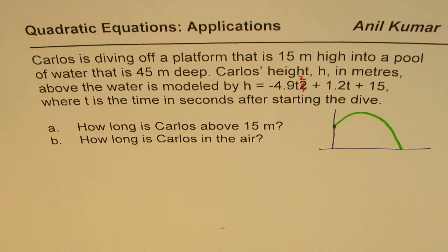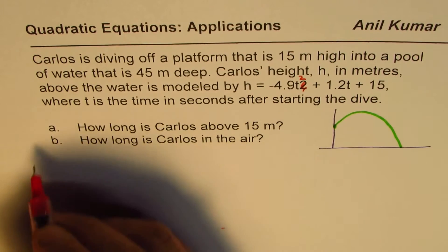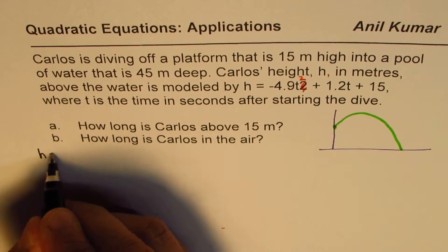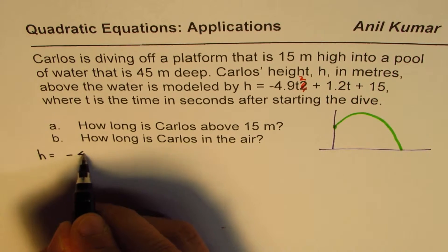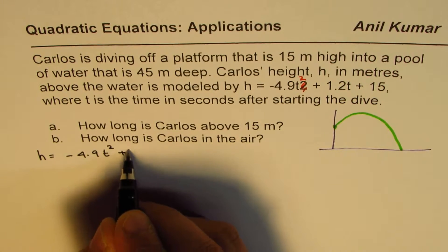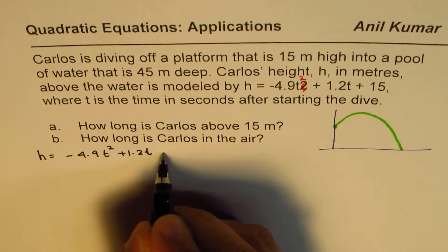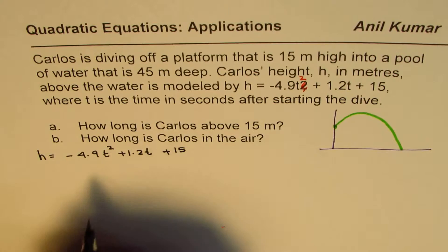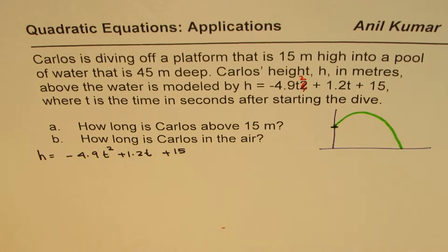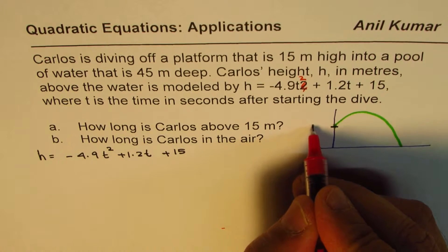As you can see from the given equation, let me write down the equation first, and then we'll discuss. The equation given to us is h equals minus 4.9t squared plus 1.2t plus 15.